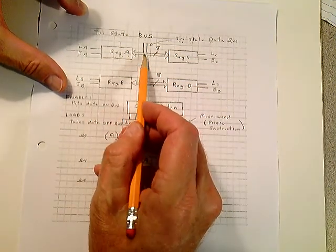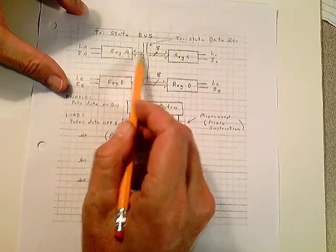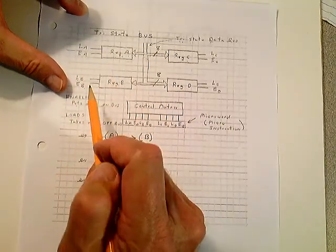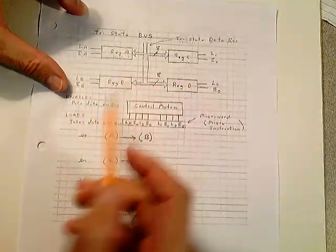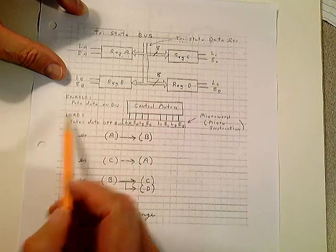If you load the A register, you're taking it from the bus to the register. You're loading the register. If you're enabling register A, you're enabling it out onto the bus. So I explain that here, the difference between enable and load.